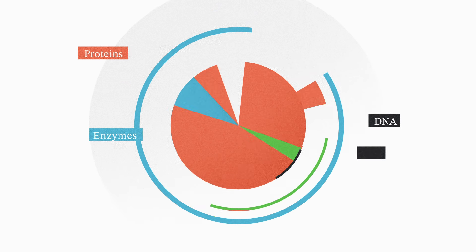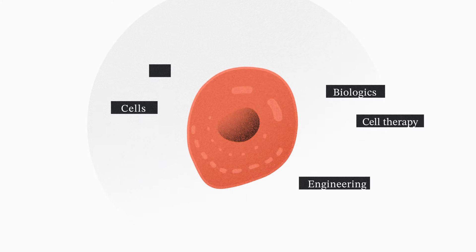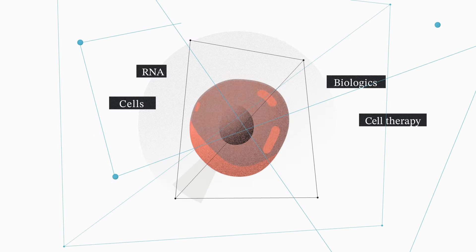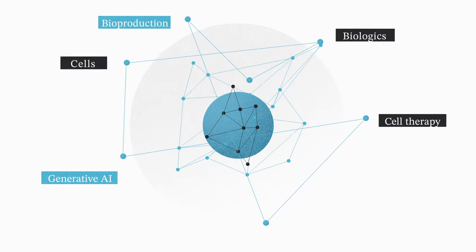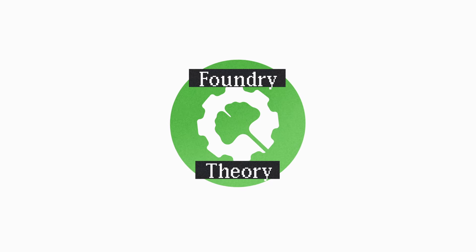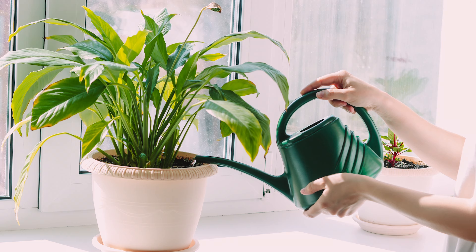Complex things get simpler when you can build them from parts. Today, we're talking about building biology from pieces of DNA or from data services. Looking at a living thing, you don't necessarily see a complex system composed of interchangeable parts. Why would you? After all, humans didn't invent biology. Biology invented us.